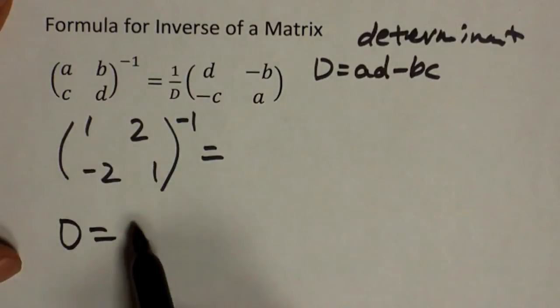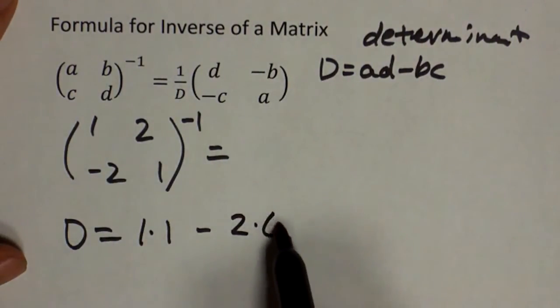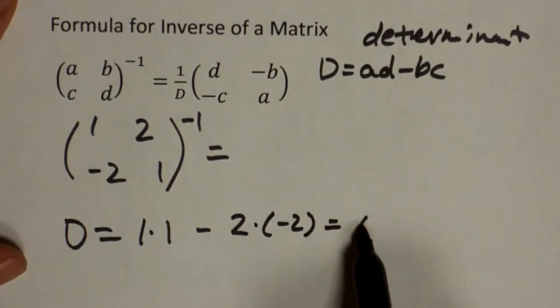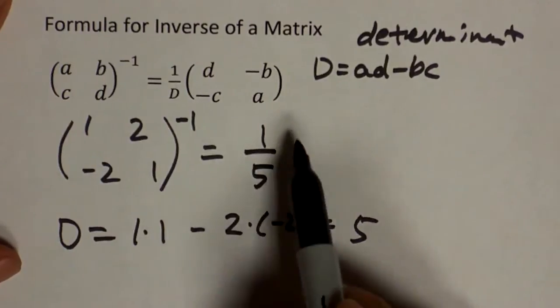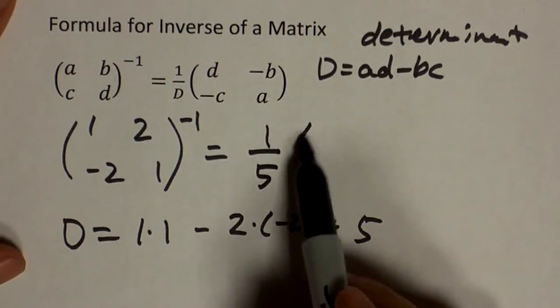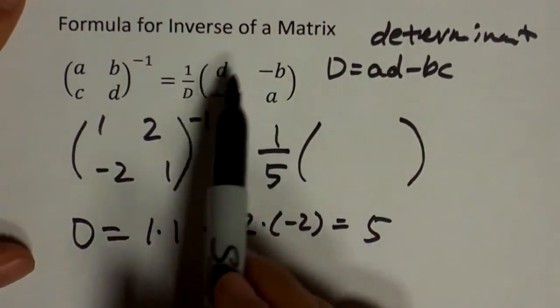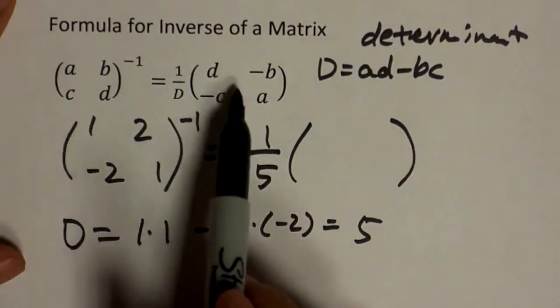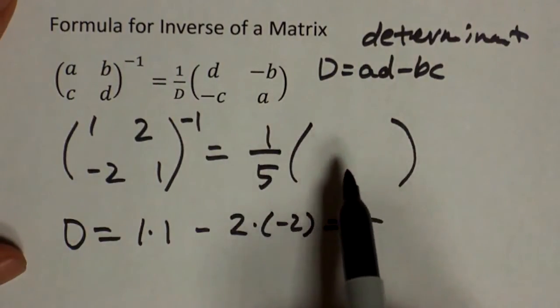D is AD minus BC. So that's two times negative two, and that's five. And that's the number I'm going to put here, one over D. Now, if you look at what we are doing in this matrix, A and D are switched, whereas B and C are negated. So that's what we are going to do.